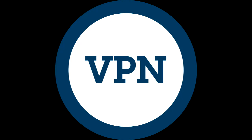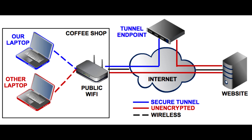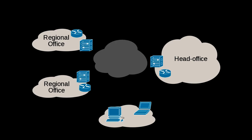A VPN, or virtual private network, is a method used to add security and privacy to private and public networks, like Wi-Fi hotspots and the Internet. VPNs are most often used by corporations to protect sensitive data.